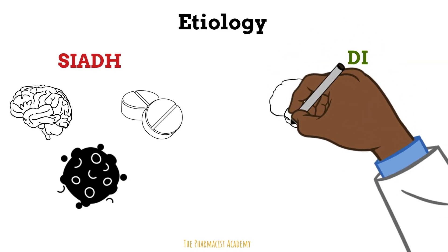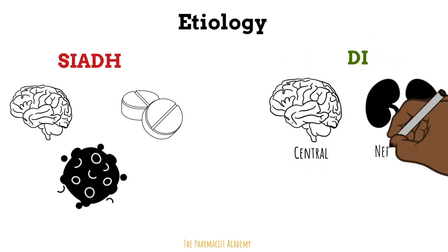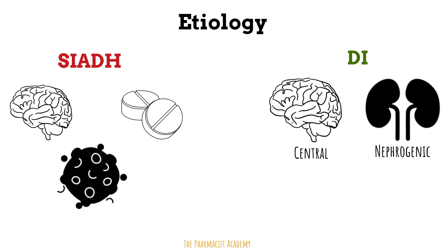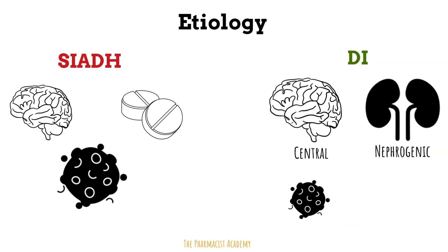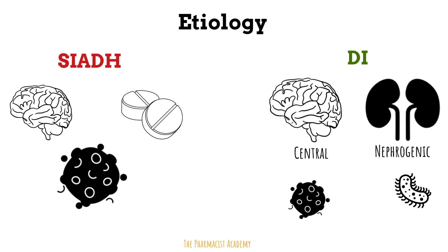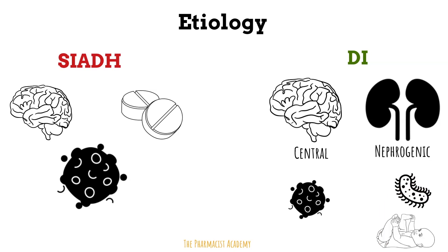For diabetes insipidus, there are two main types: central and nephrogenic. Central is usually caused by a malignancy, which will reduce the amount of vasopressin that is released. Nephrogenic can be caused by an infection where the vasopressin is not working well when it binds to the receptor, or it could be hereditary — due to a mutation in the vasopressin receptor, also known as the AVP (arginine vasopressin) receptor. There is a gene mutation that is passed on, so whenever ADH binds to it, it is ineffective.